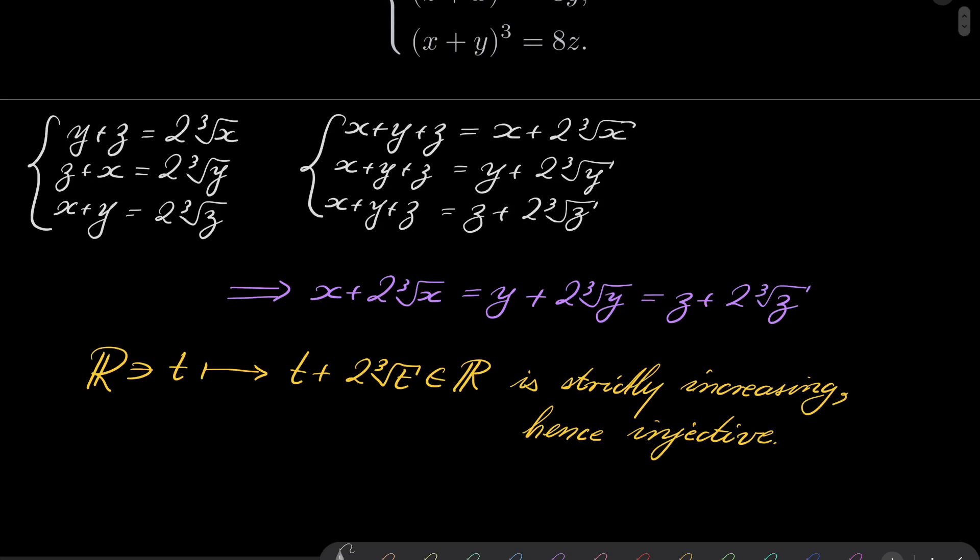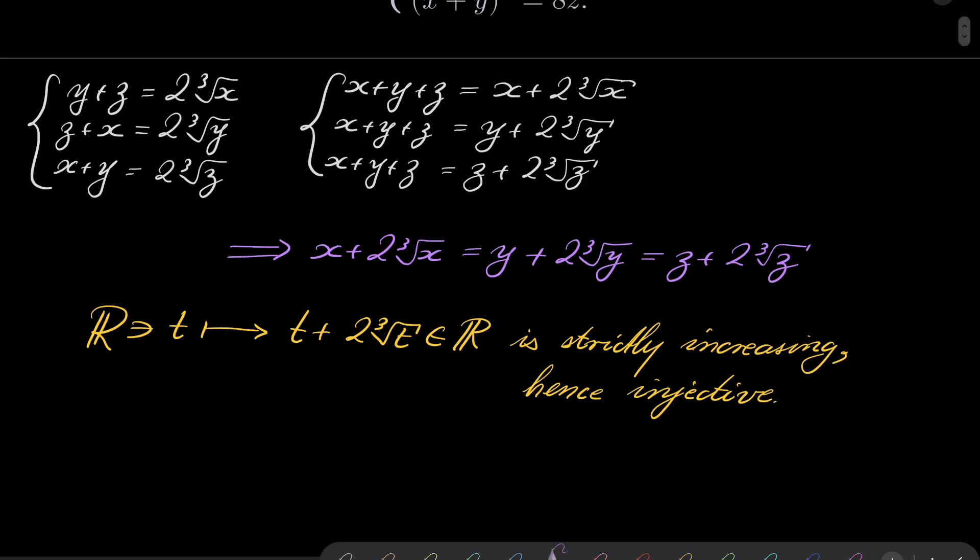Alright, so now we know that our function is increasing, hence injective. Notice that since we have three values which are the same, by injectivity the arguments must be the same.